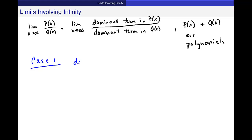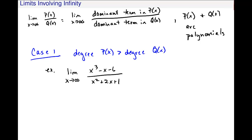And that is the degree of p(x) is bigger than the degree of q(x). Okay, so here's the example. And we want to find the limit as x approaches infinity of x cubed minus x minus 6 over x squared plus 2x plus 1.